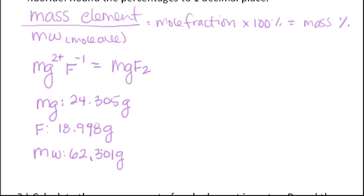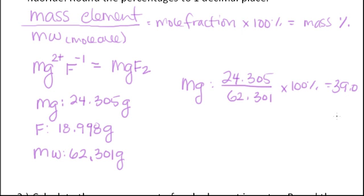Now we have our weights and we can start plugging this into the formula I wrote earlier. For magnesium, you do 24.305 over 62.301 times 100 percent, and that will give you 39.0 percent. Let's write this up here.